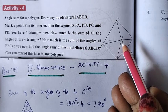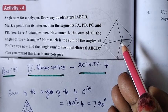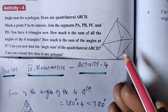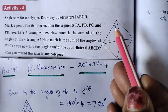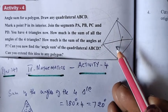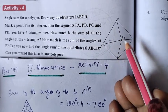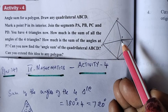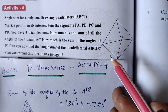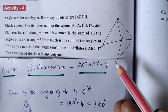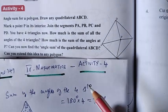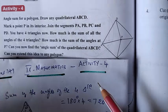The vertex P is 360 degrees. To find the angle sum of quadrilateral ABCD: take the 720 degrees — that is 180 + 180 + 180 + 180 — minus the vertex P, which is 360. That gives us the angle sum of quadrilateral ABCD. Can you extend this idea to any polygon?